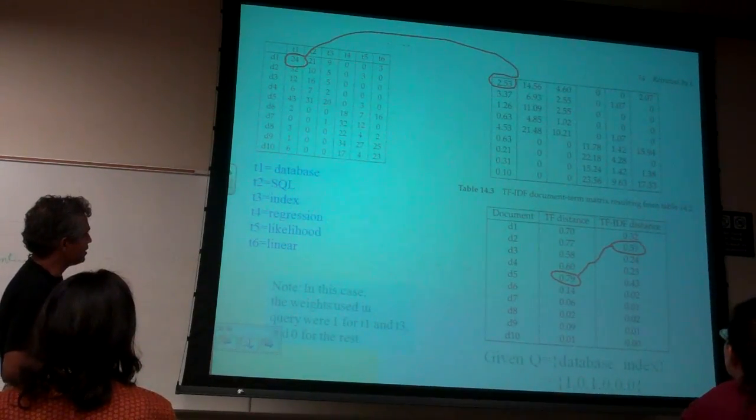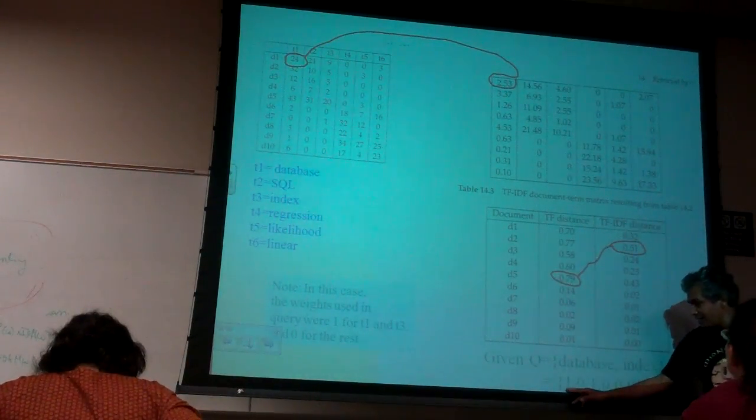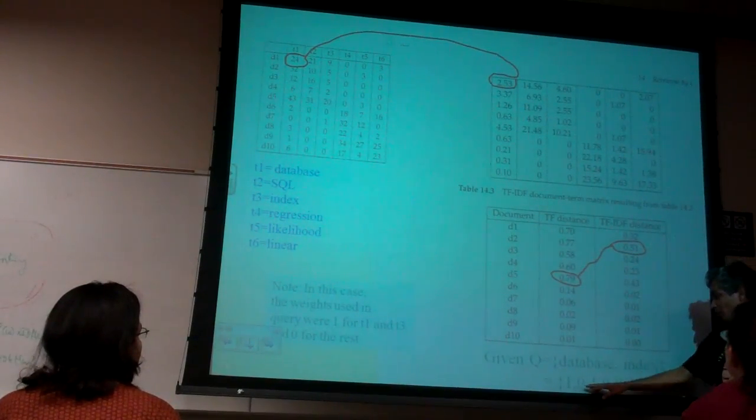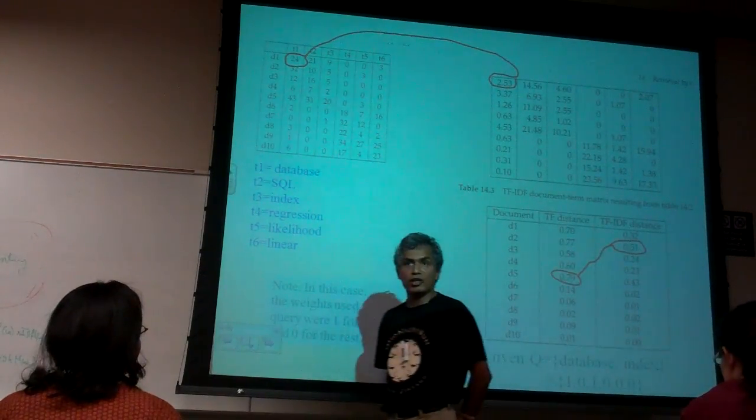The other final thing is that if I'm giving you a query, in this case, 'database index.' So once again, I can, right now, in this slide I'm assuming, I'll leave the query as it is. So I'll just say 1, 0, 1, 0, 0, 0. So I'm not doing TF-IDF to the query itself.